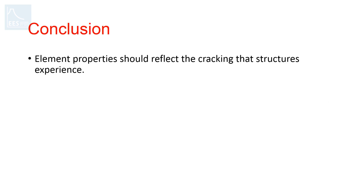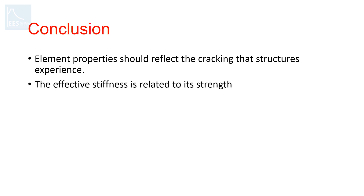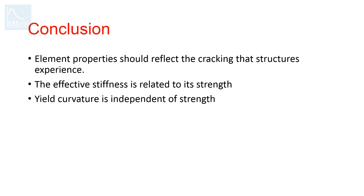To summarize, the analysis of RC structures based on linear response should account for the cracking that structures experience. This is done by assigning modifiers to the gross stiffness. The cracked stiffness, or effective stiffness, which is a fraction of gross stiffness, is related to its strength, while the yield curvature is independent. Thank you everyone for watching till the end. I hope this explains the provisions related to effective stiffness in building codes. Please feel free to comment below if you have any queries, and if you liked this, please hit the like and subscribe button.